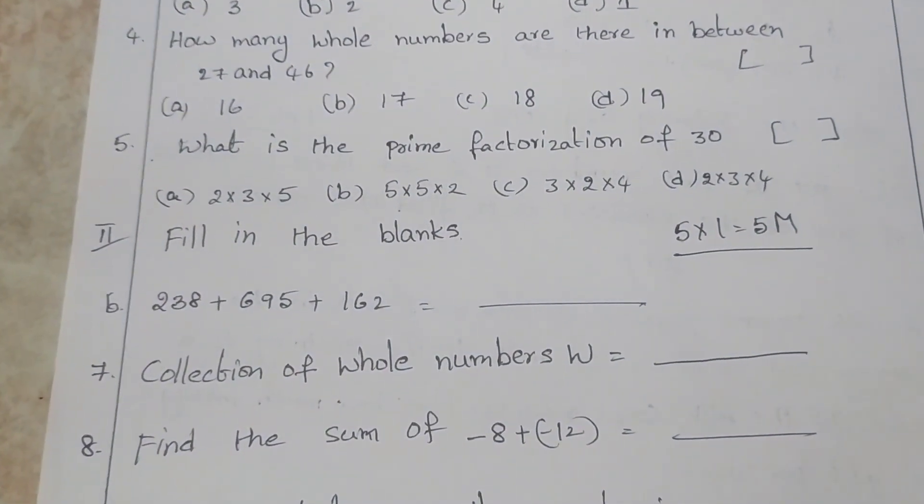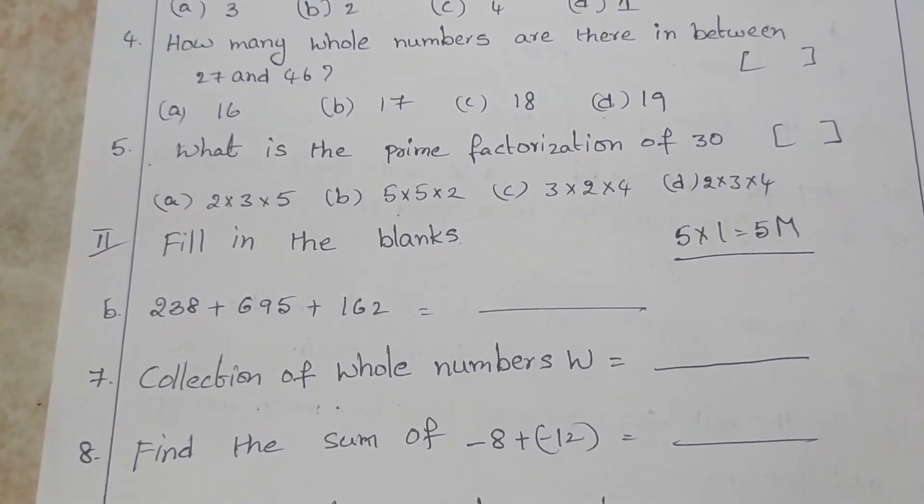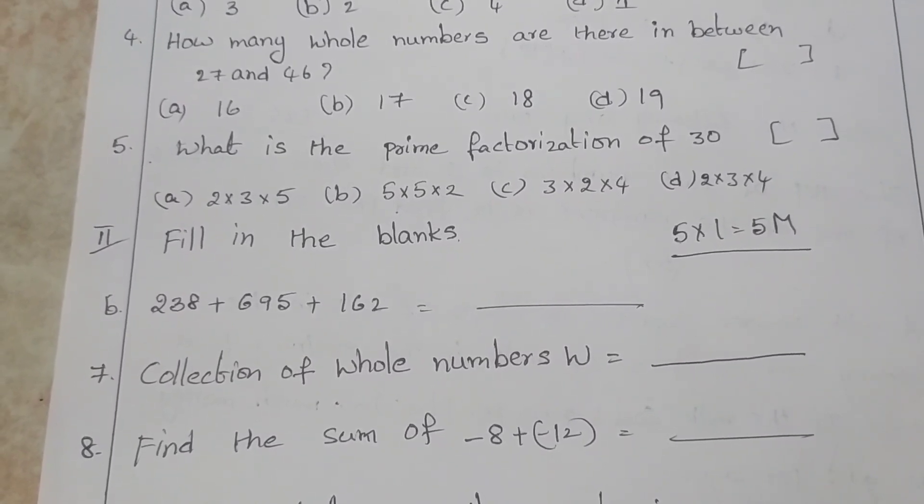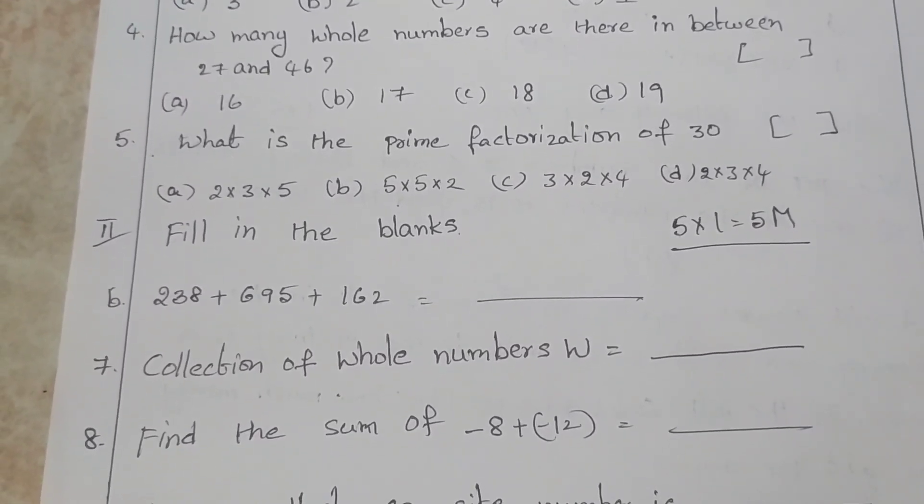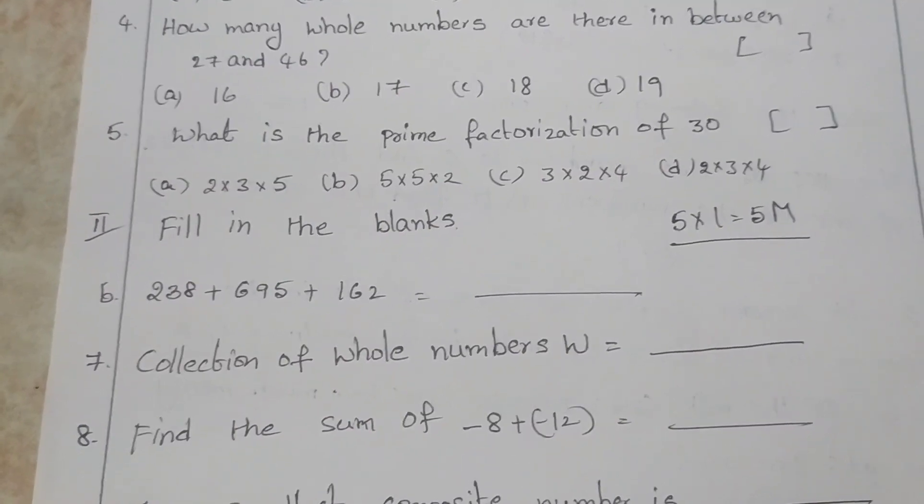Fill in the blanks. 238 + 695 + 162 is equal to dash.